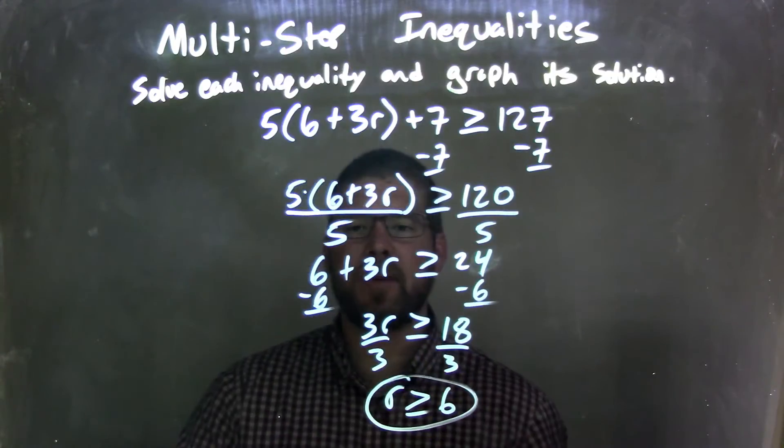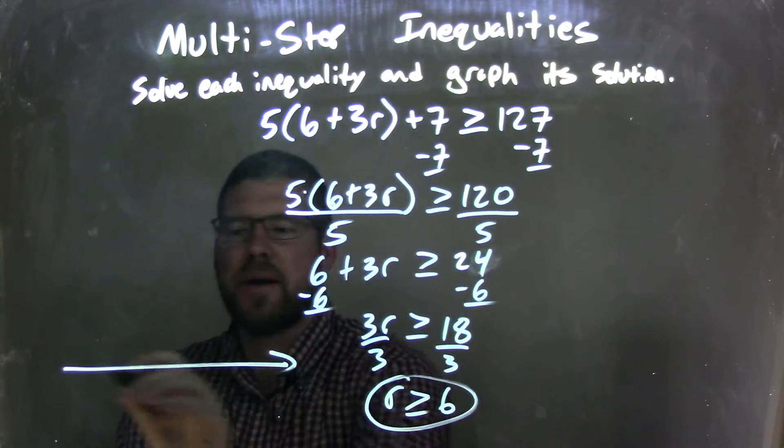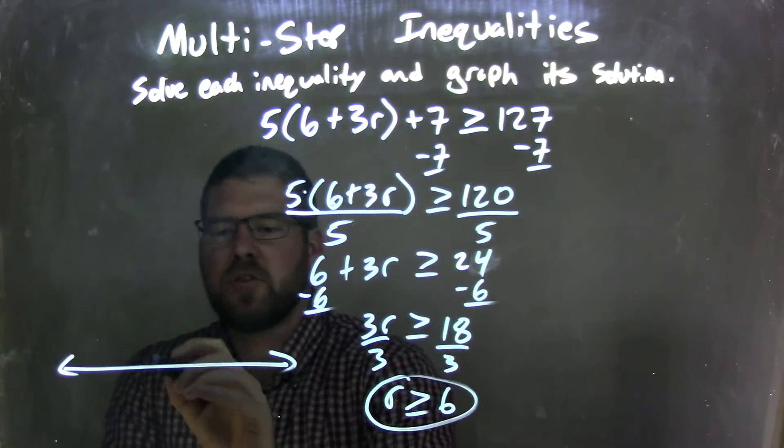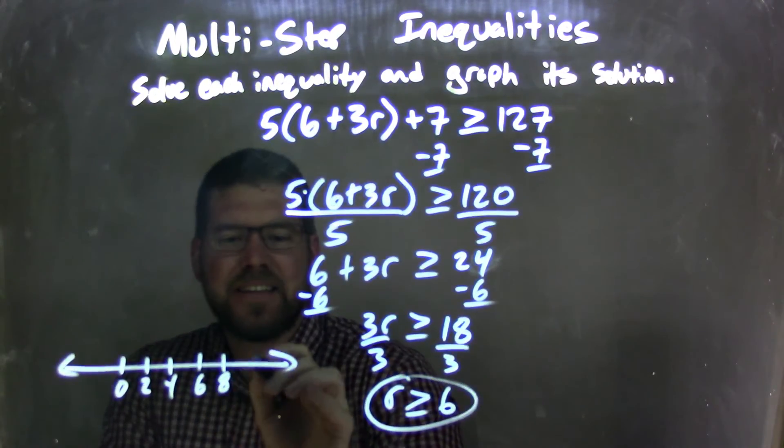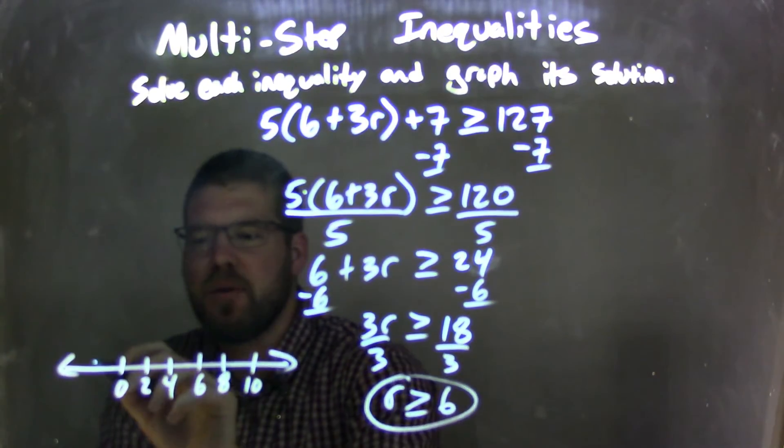So now we have R isolated, it's by itself, so I'm going to graph it, make a little number line right here. Let's go by 2's. So we have 0, 2, 4, 6, 8, 10, and a negative 2 right there.